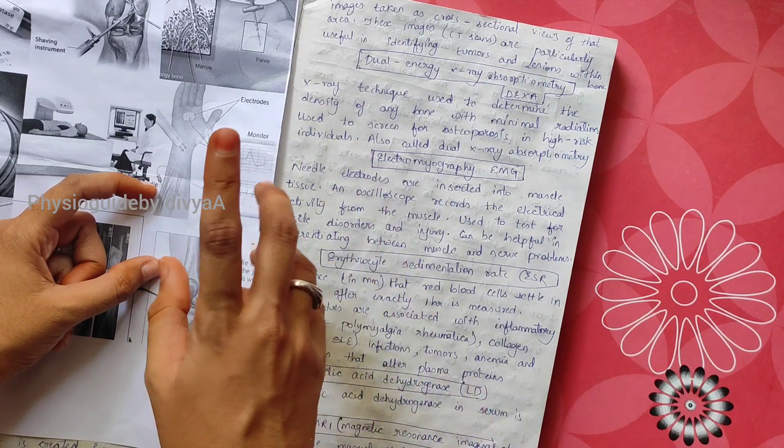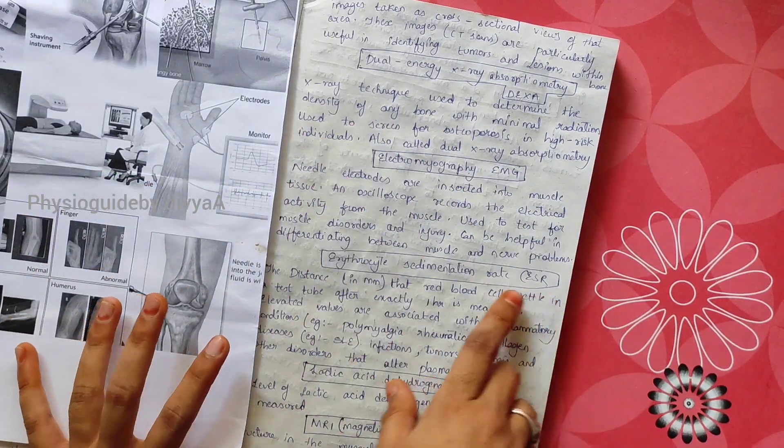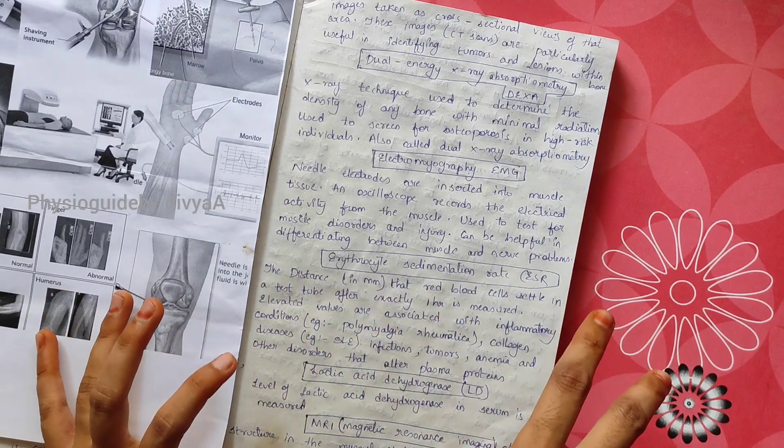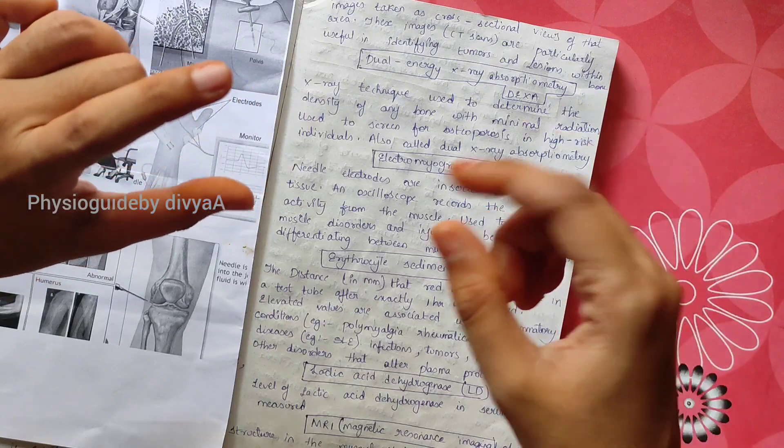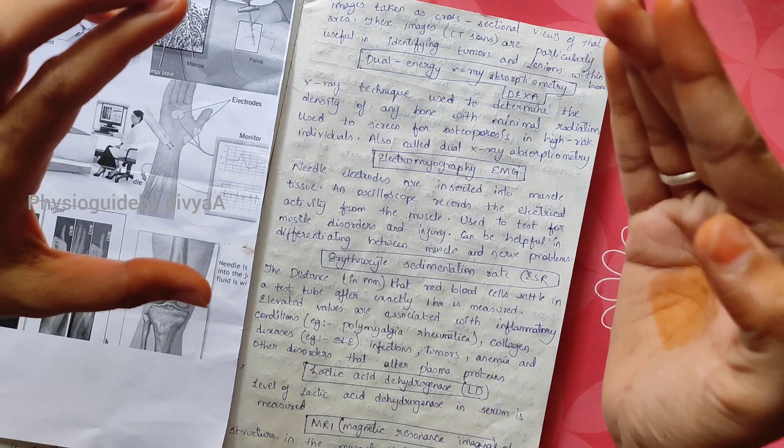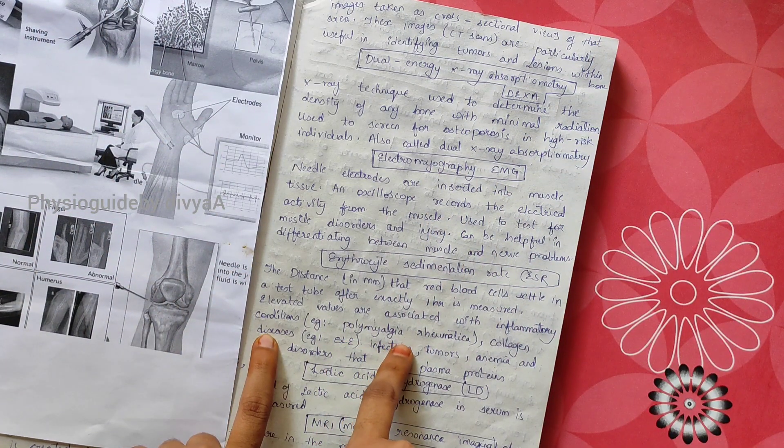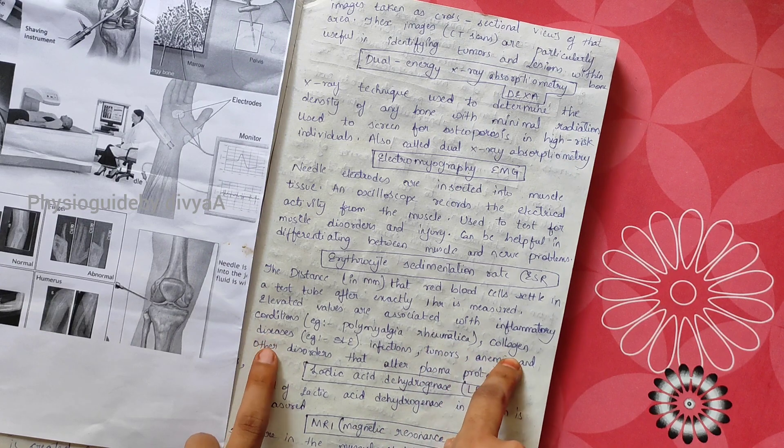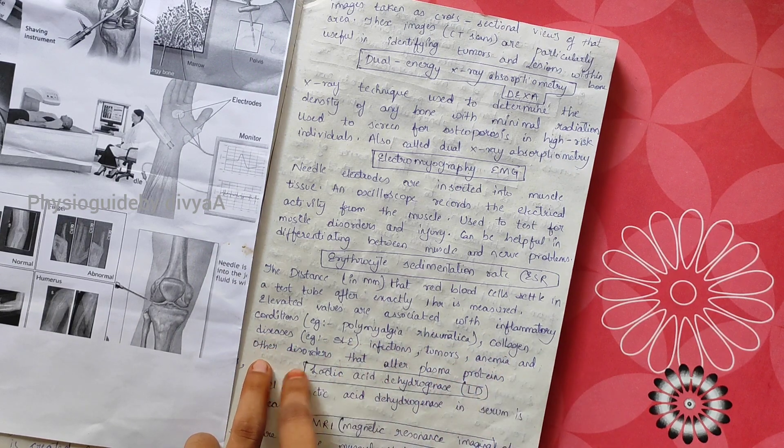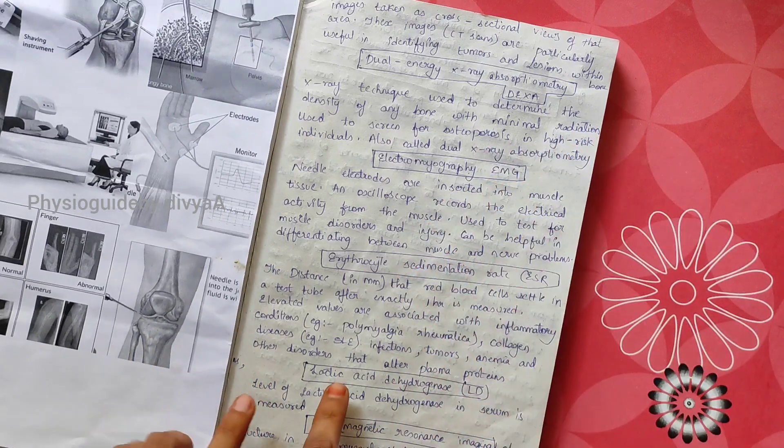ESR: the distance in millimeters that RBCs settle in a test tube after exactly one hour is measured. Elevated values are associated with inflammatory conditions like polymyalgia rheumatica, collagen diseases, infections, tumors, anemia, and other disorders that alter plasma proteins.